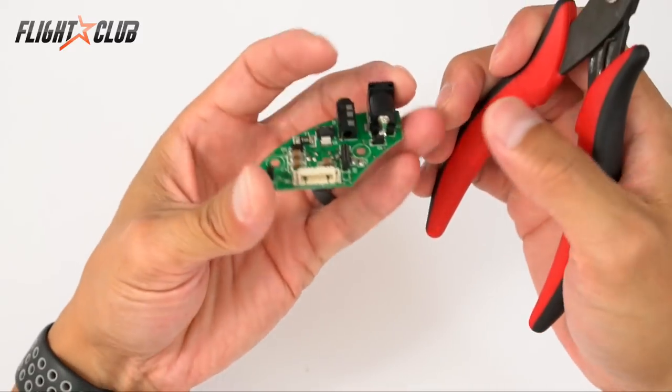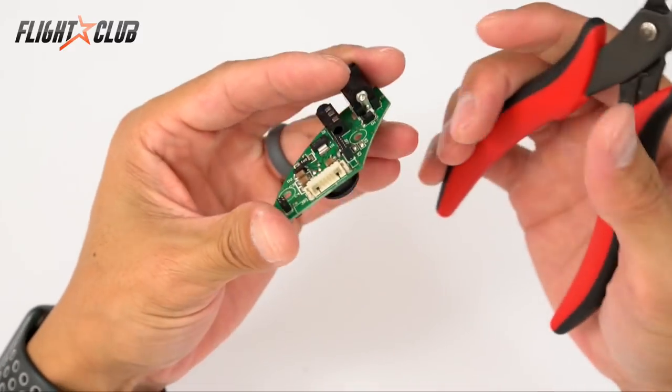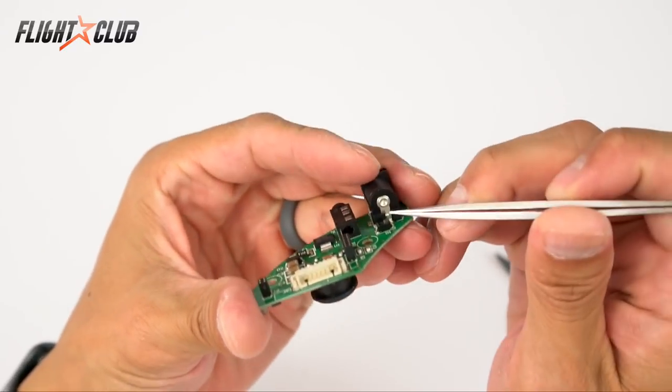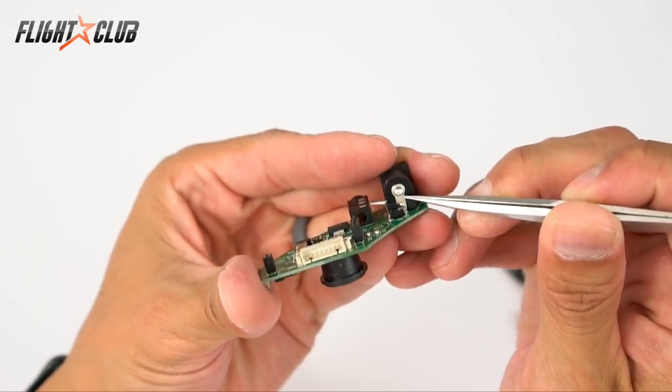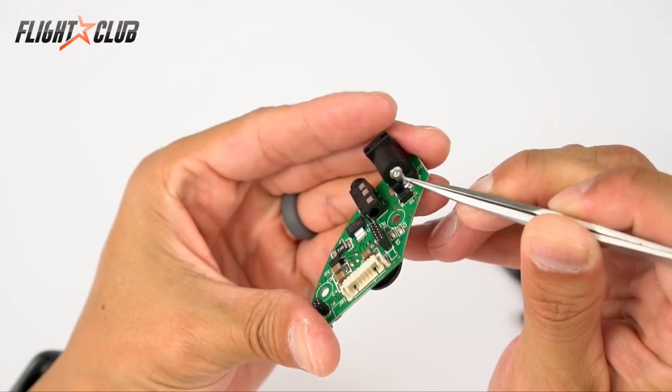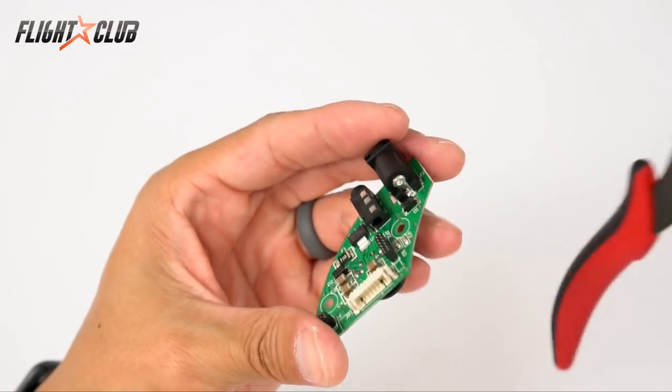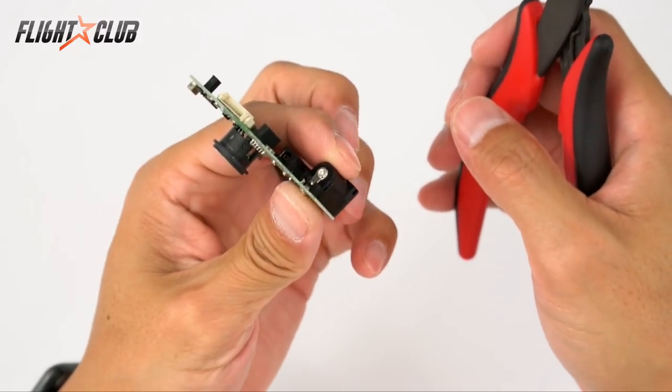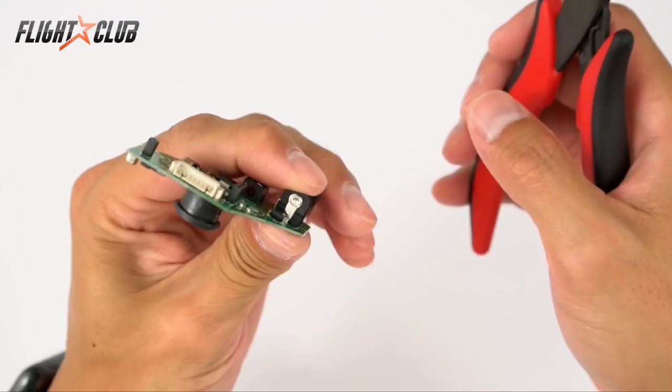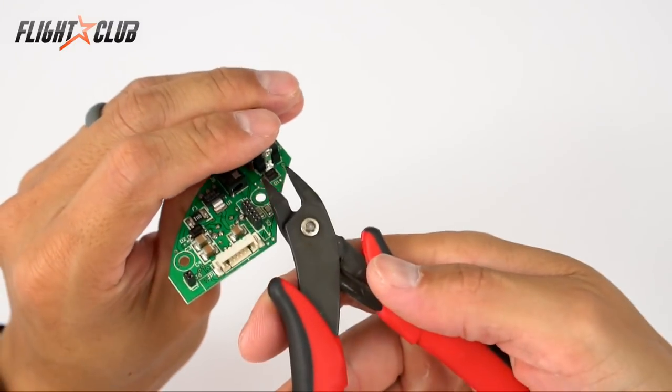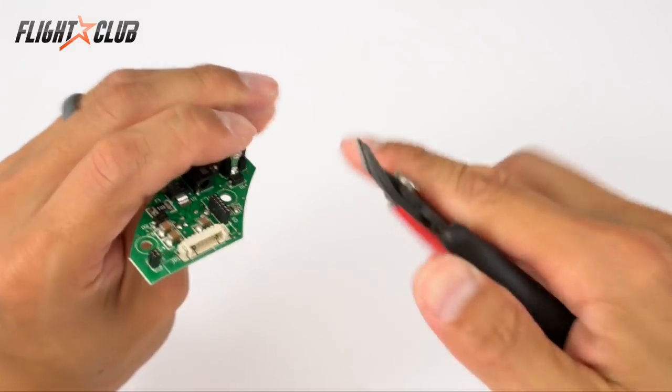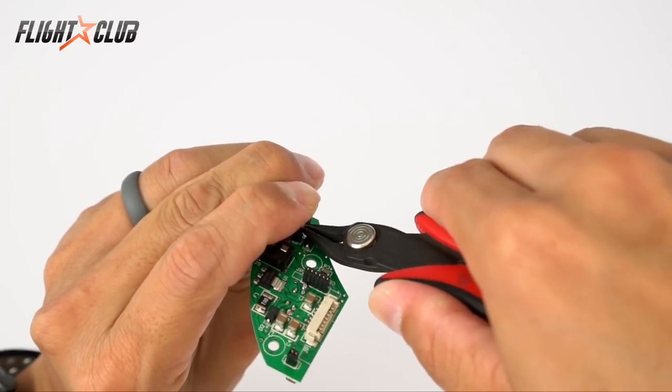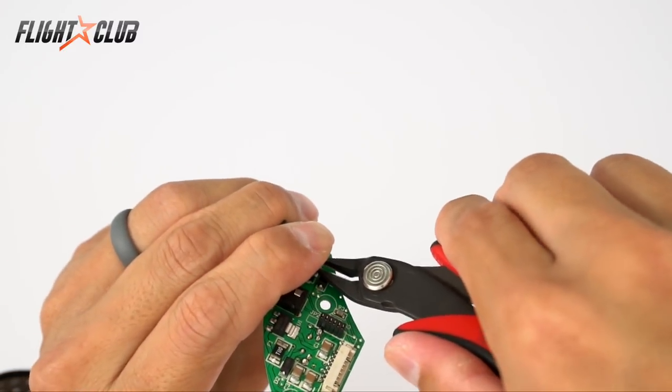Next, you're going to get the power module ready to be soldered. The only mod you have to do to this board is you have to cut this little tab on the back of the switch because you're going to break the connection right here so it'll go to the switch. So you're going to hold down on this connector and then just take some wire cutters and you can cut this part off, or not cut it off but just make a little break in the connection.